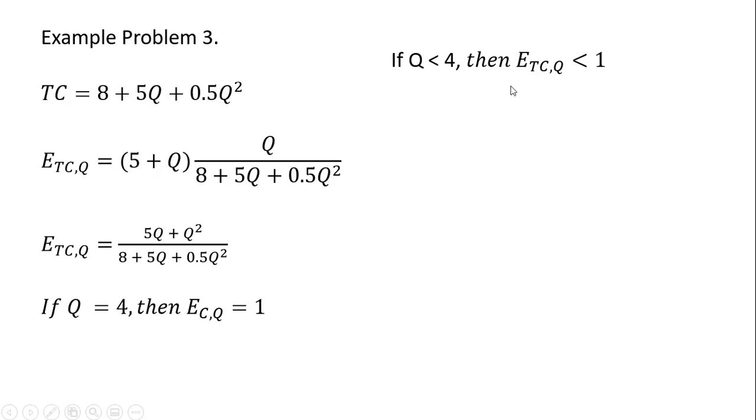If Q is less than 4, then the cost output elasticity would be less than 1. And finally, if Q is greater than 4, the cost output elasticity will be greater than 1. All right. That's it for this video. Hope you found it useful.